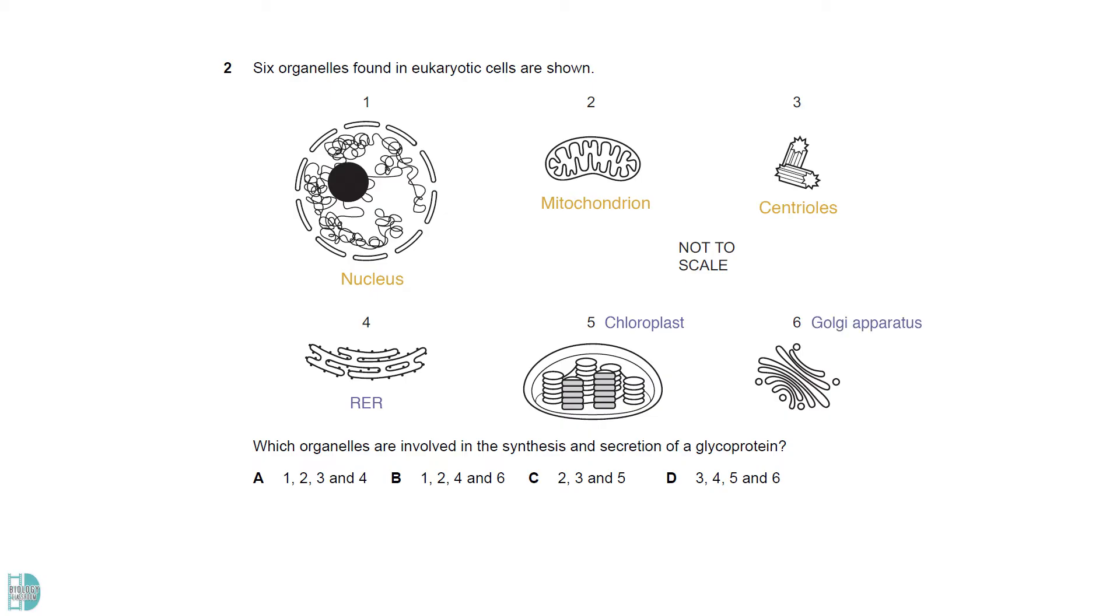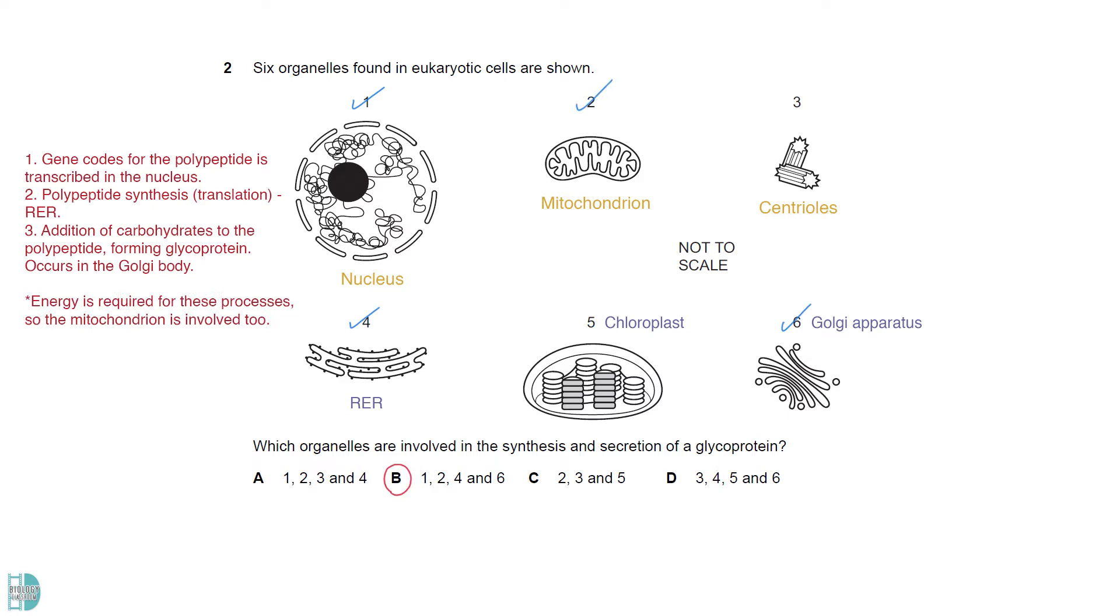To synthesize and secrete glycoprotein, we need to first carry out transcription in the nucleus using the gene codes for the polypeptide. Then, ribosomes on the RER will carry out the process of translation using the mRNA to synthesize the polypeptide. This polypeptide will then be transported to the Golgi body for the addition of carbohydrates forming glycoprotein. All these processes require energy, so mitochondrion is needed for the production of ATP.